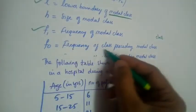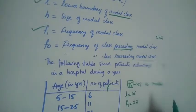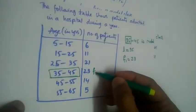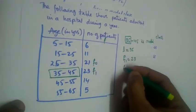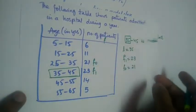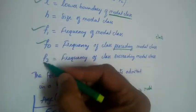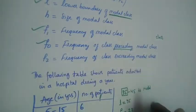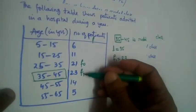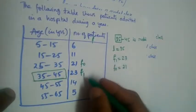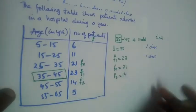F0 is the frequency of the class preceding the modal class. The class preceding 35–45 has frequency 21, so F0 equals 21. F2 is the frequency of the class succeeding the modal class. The class succeeding 35–45 has frequency 14, so F2 equals 14.